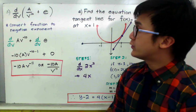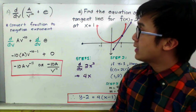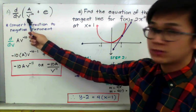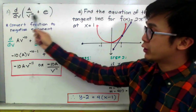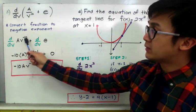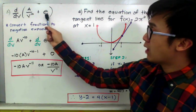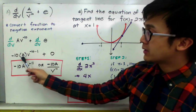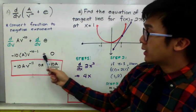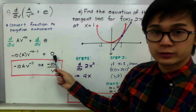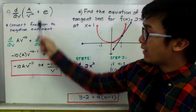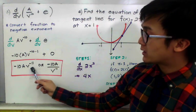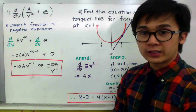For example number 3, we're going to find the derivative of a over v raised to 10 plus e in terms of v. We convert our fraction into a negative exponent, giving us the derivative of av raised to the negative 10 plus the derivative of e in terms of v. We bring down negative 10: negative 10 times a times v raised to negative 10 minus 1, plus the derivative of the constant e which is 0. So the derivative is negative 10av to the negative 11, or equivalently negative 10a all over v raised to 11.